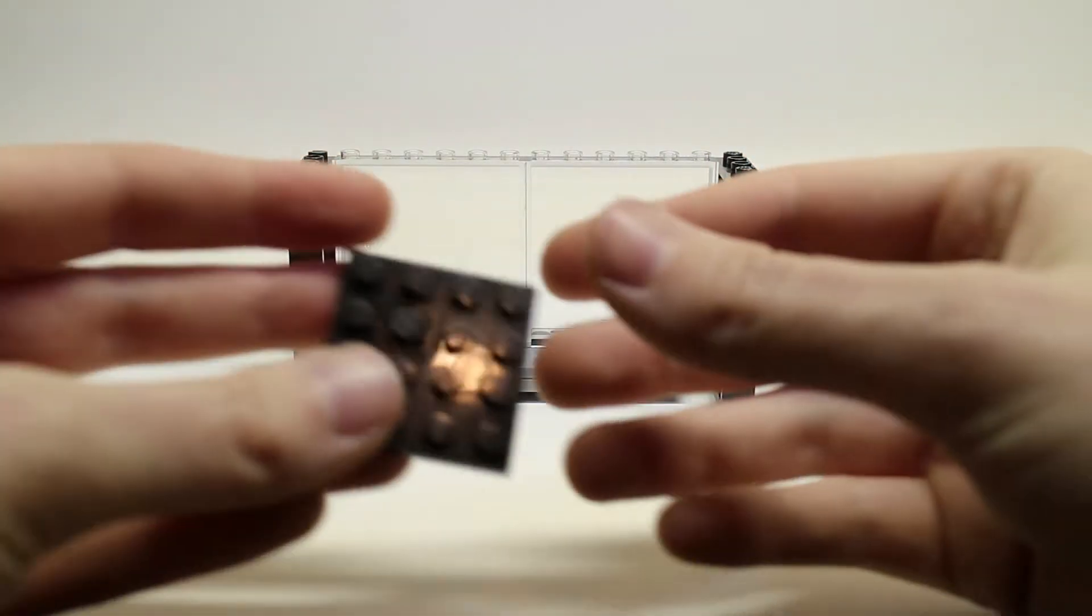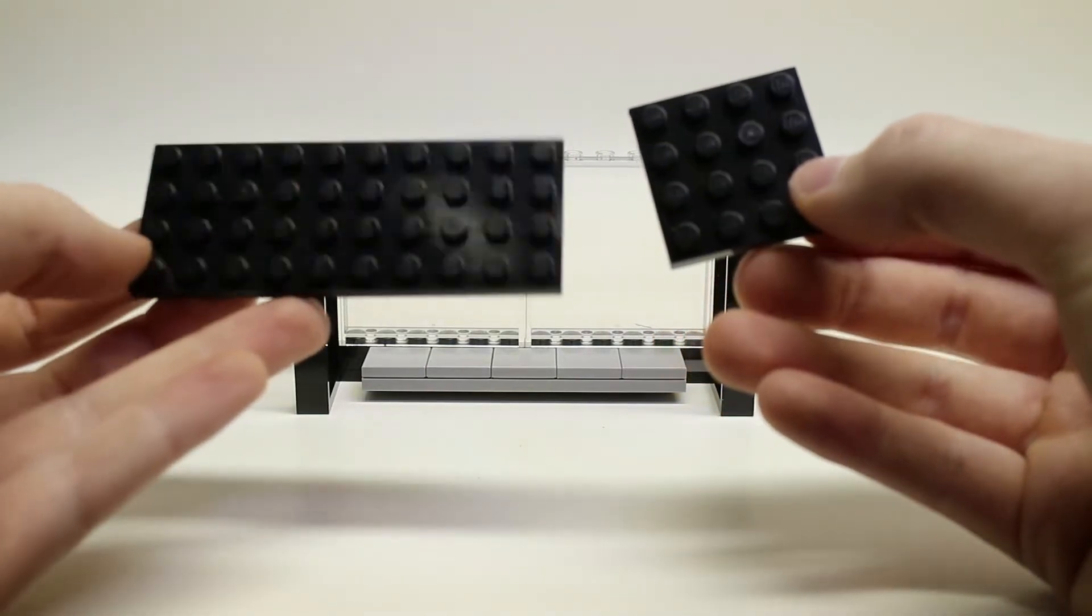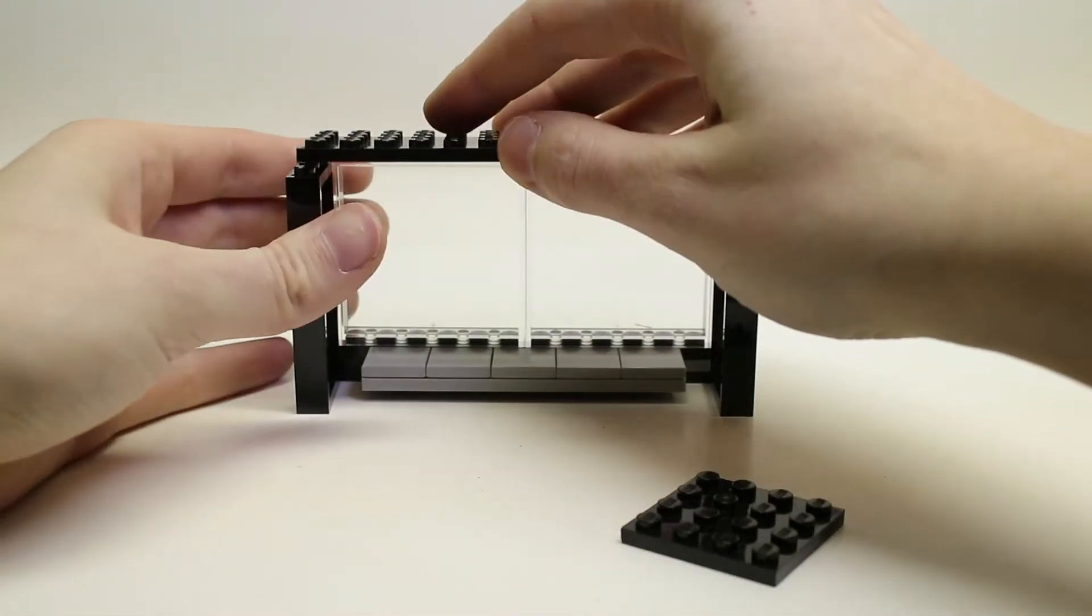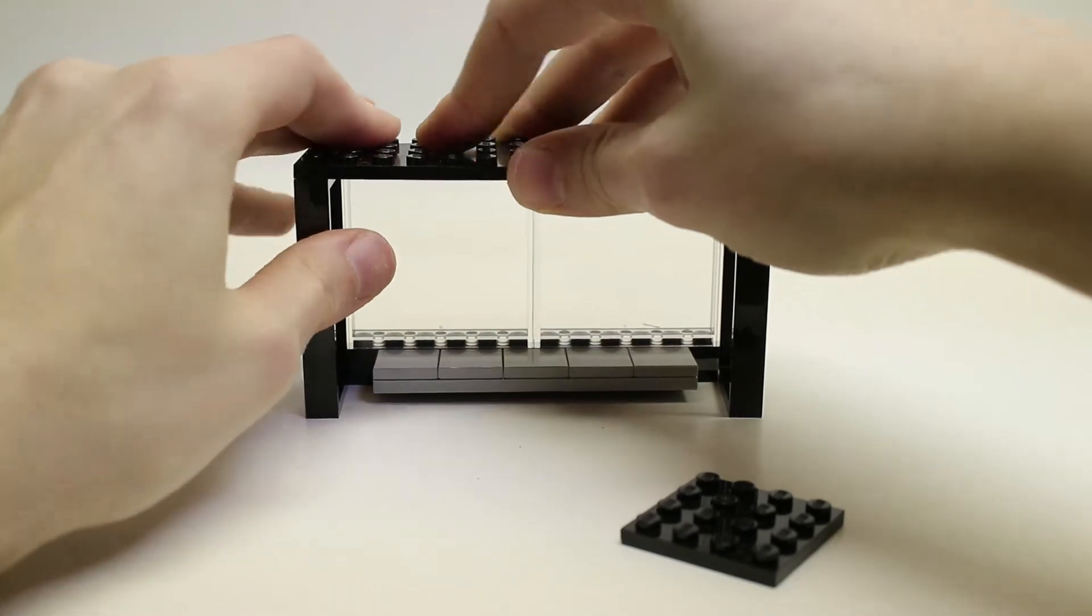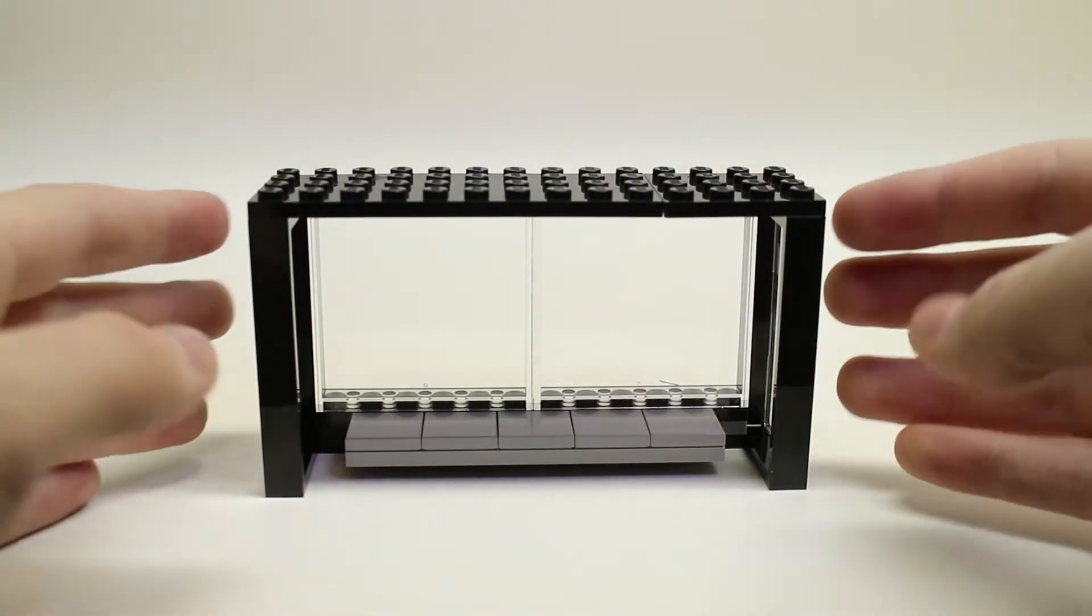Next you'll need your 4 by 4 black plate and your 4 by 10 black plate and you're going to place them on the top where the roof is going to go. Now that we have the basic structure for our bus stop, we'll finish off the roof.